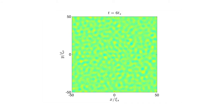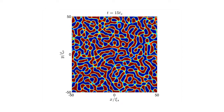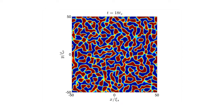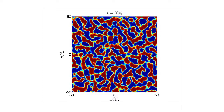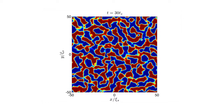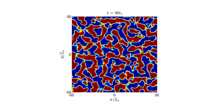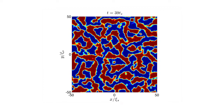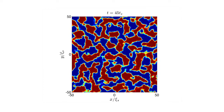In this simulation, we show the dynamics of a small quasi-two-dimensional condensate undergoing this evolution. Starting from the unmagnetised state, you will notice that small domains form. Then, as time progresses, these domains tend to grow larger.